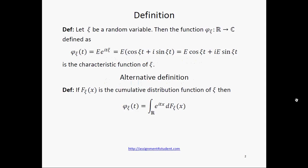Let xi be a random variable, then the function phi xi from the set of real numbers to the set of complex numbers, defined in the following way, is the characteristic function of xi.